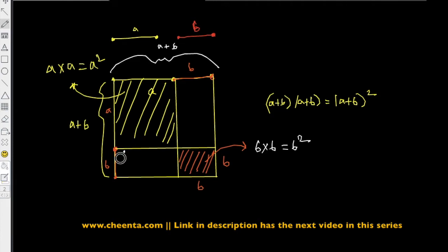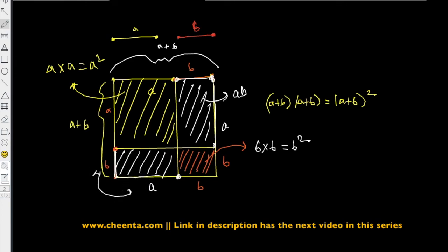And we are left out with two rectangles, one of them is here and one of them is here. This one, this side length is a, this side length is b, so the area of this rectangle is ab. The same goes with this other rectangle, so that's also ab.